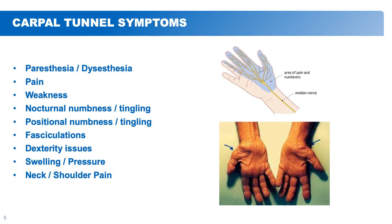People will also complain of fasciculations or muscle twitching. Dexterity issues are another common complaint — having a hard time with fine motor tasks, feeling small objects in pockets, or trying to write, lift, or pick up a piece of paper. Swelling and pressure is another complaint where people may feel pressure and swelling in their hands in the morning. Importantly, we also have to determine whether symptoms are coming from your neck, shoulder, or hand, so it's a team approach.